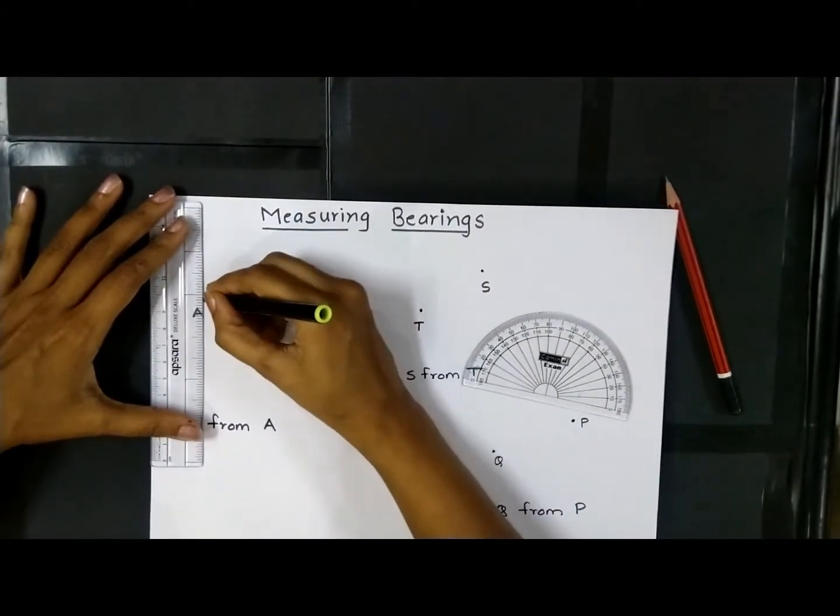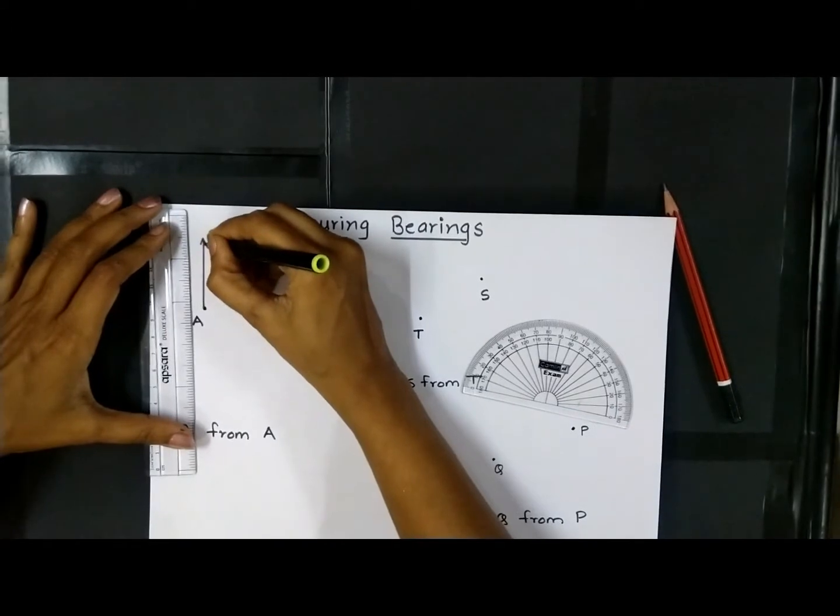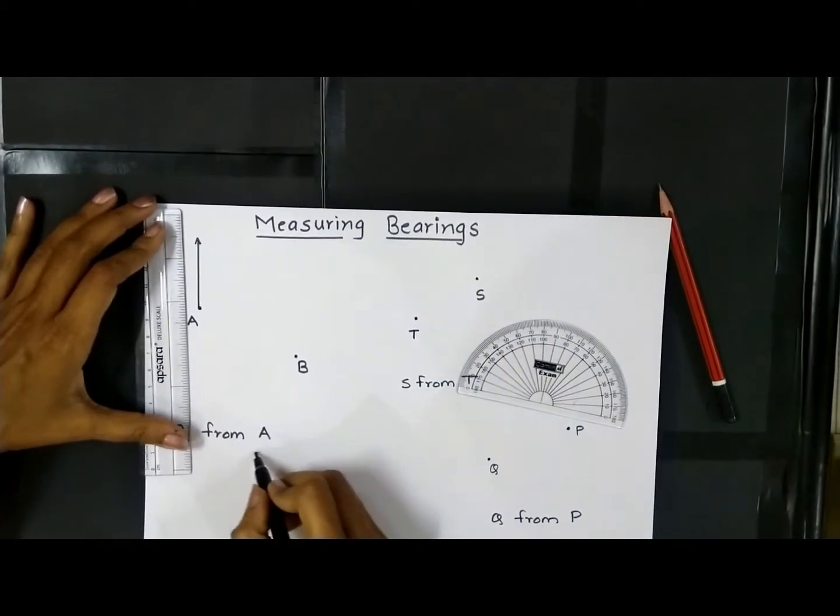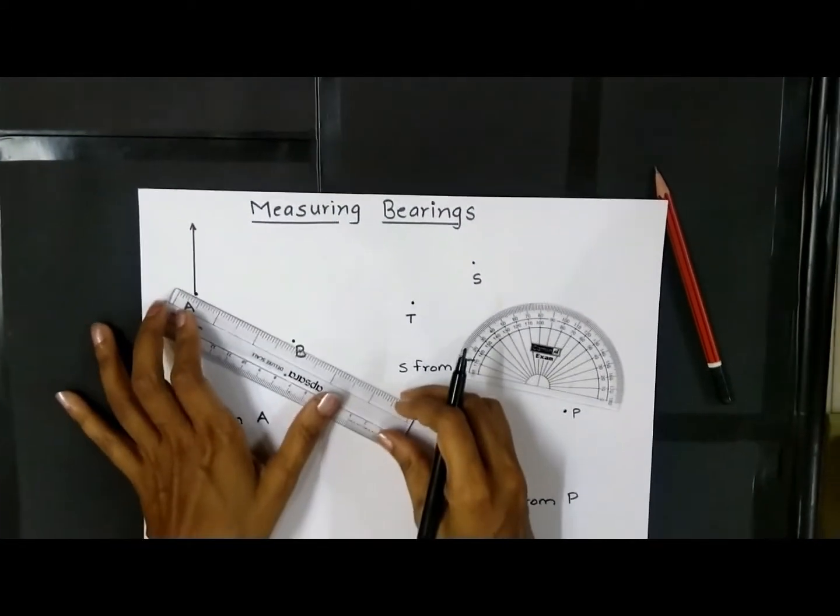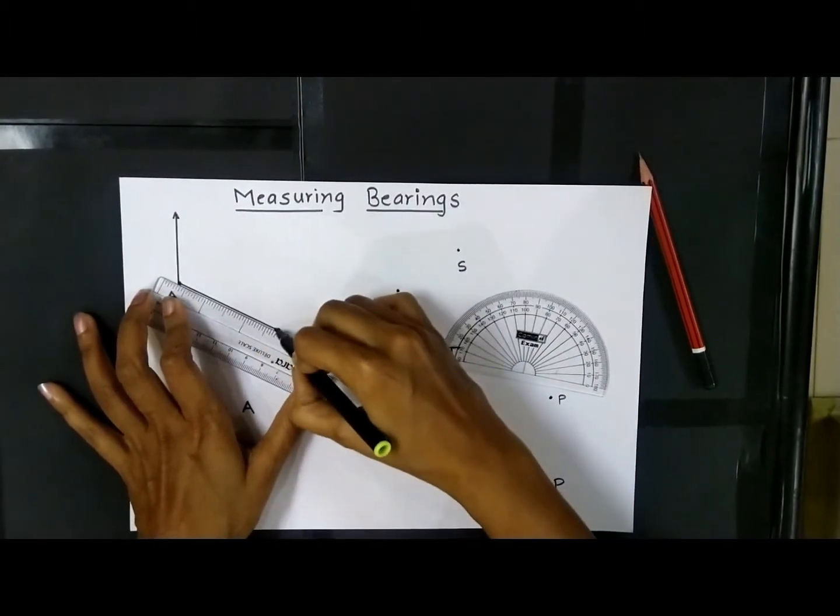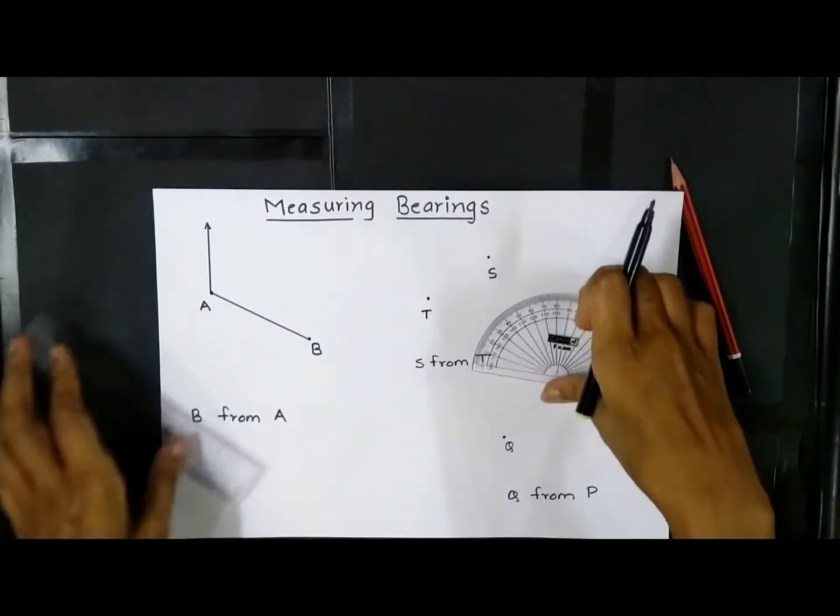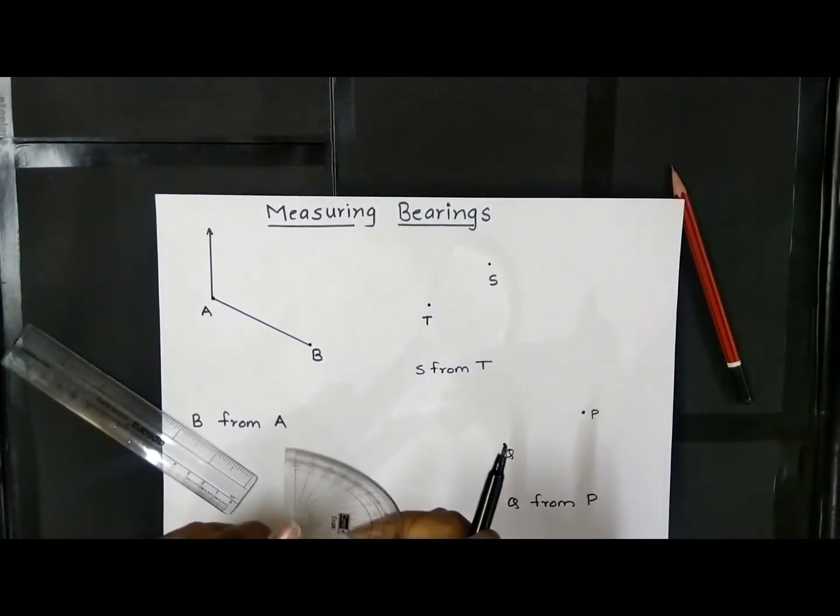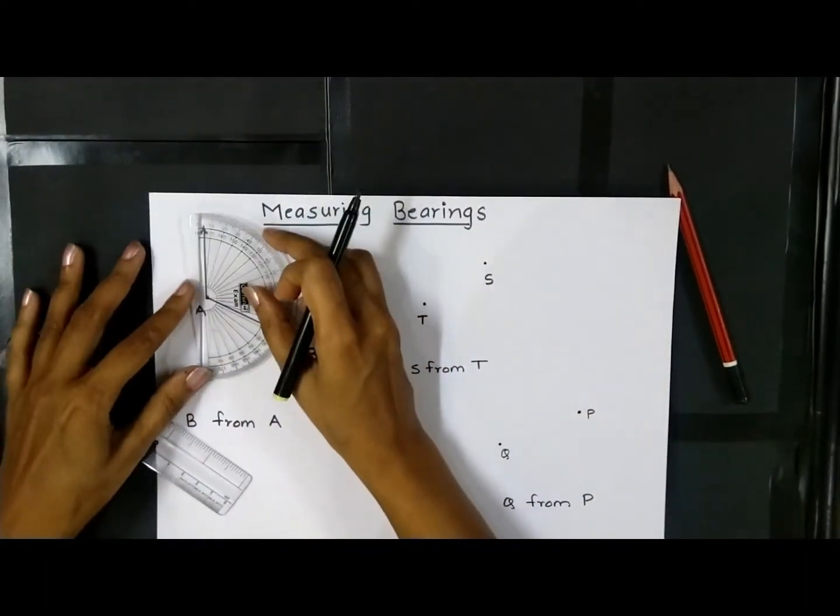I will draw a perpendicular north at A because it is bearing from A. Then join the distance between A and B. Keep the protractor in such a way that it's in alignment with A.